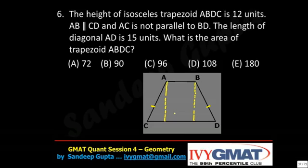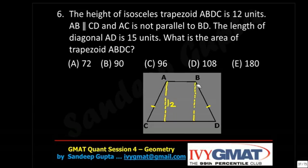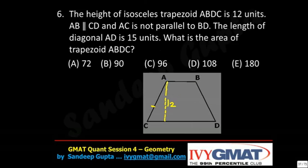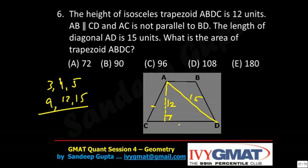I have two of the sides: 12 and 15, and this is a 90-degree angle. As per the 3-4-5 Pythagorean triple, if one side is 12 and the hypotenuse is 15, the third side should be 9. So the base is 9 and the height is 12.